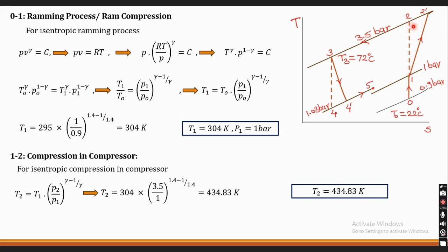Next, process 1 to 2 — compression in the main compressor. For isentropic compression: T2 = T1 × (P2/P1)^((γ−1)/γ) = 304 × (3.5/1)^((1.4−1)/1.4) = 434.83 K. This is the isentropic temperature at the exit of the compressor.